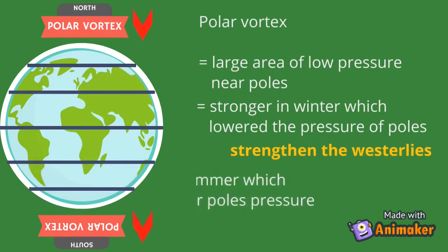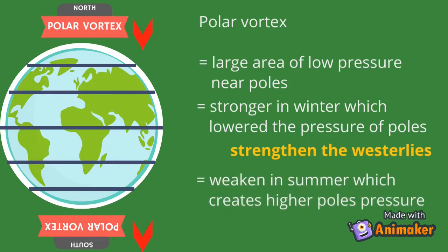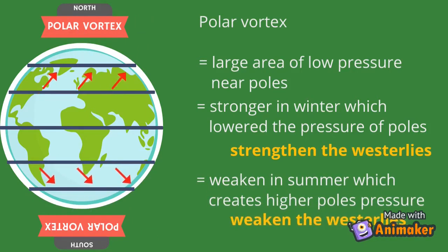In summer, the polar vortex weakens, which creates higher pressure over the poles, so the Westerlies become weak.